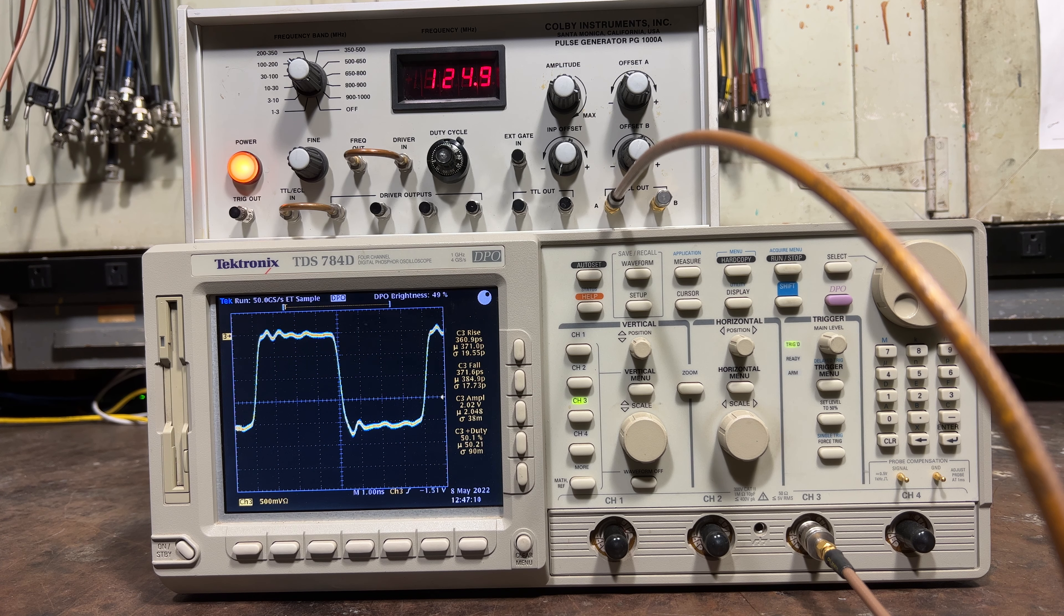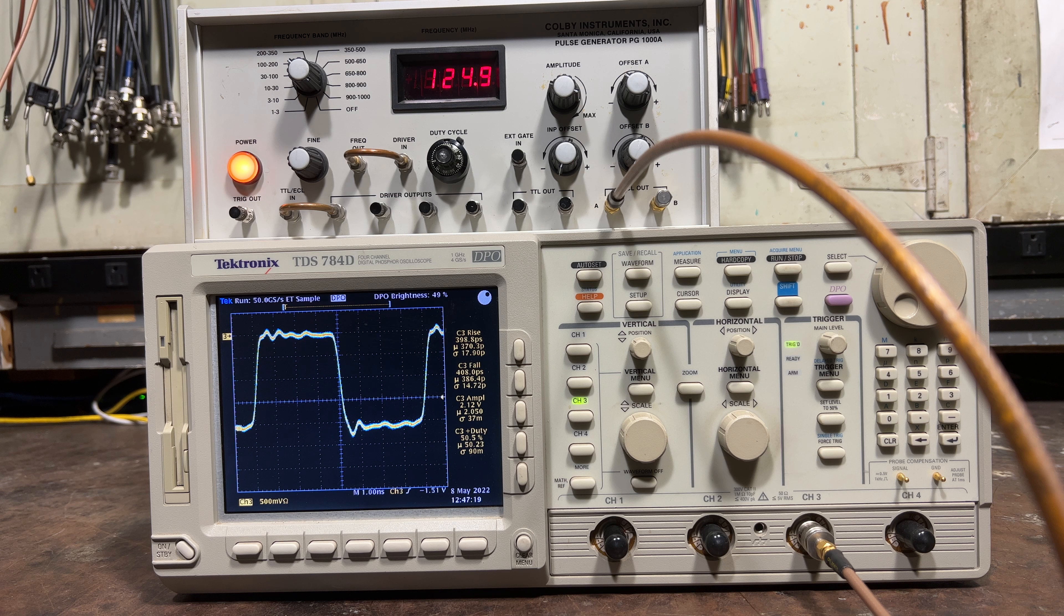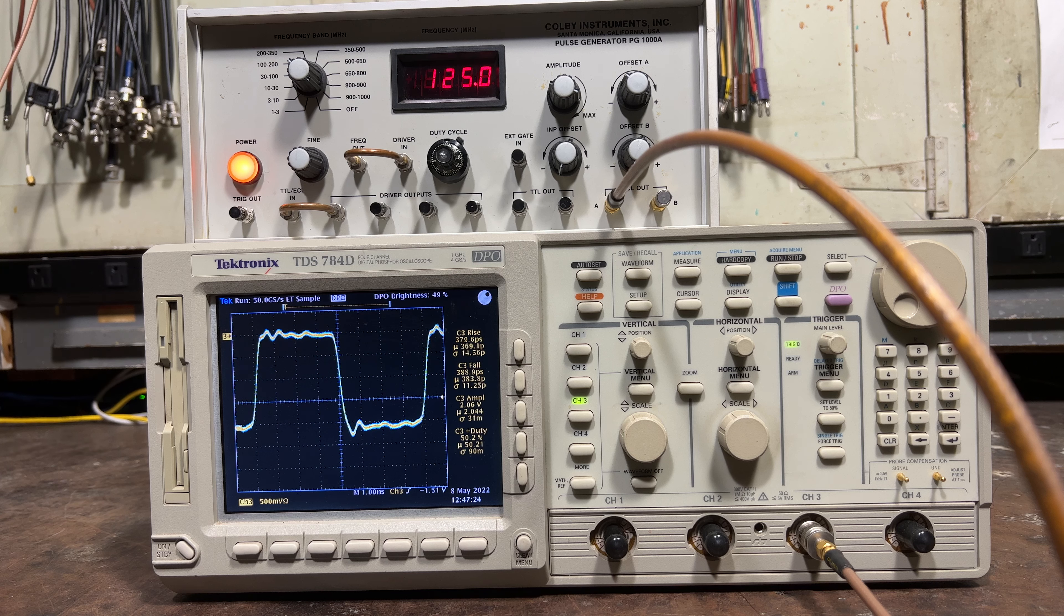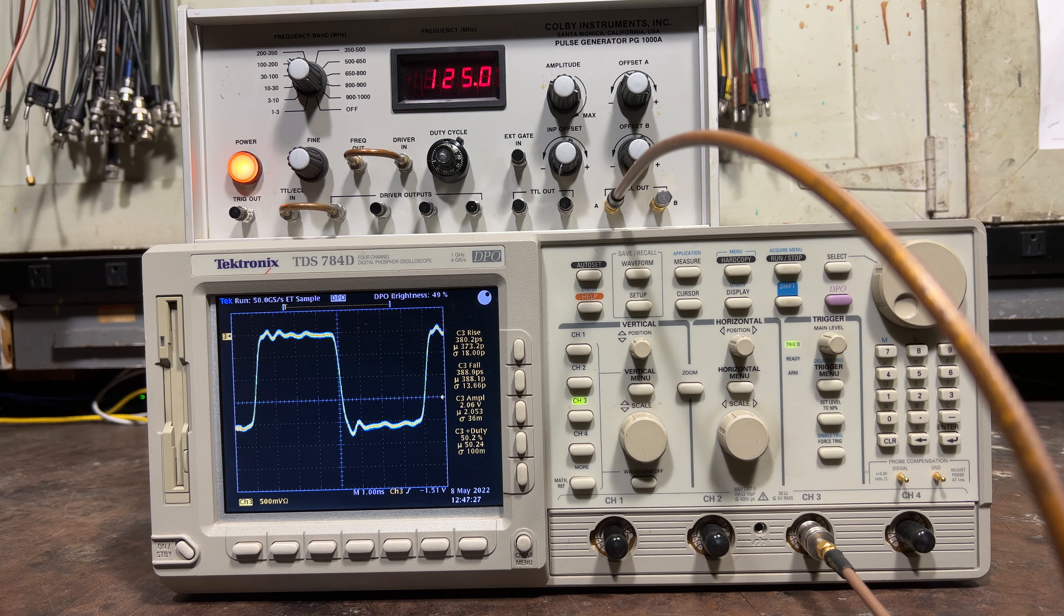Here to show the rise and fall time measurement limitations of the Tektronix TDS-784D, I'm using my Colby Pulse Generator to put out a 125 MHz square wave directly into the scope. The rise and fall time of the generator is on the order of 200 to 250 picoseconds.